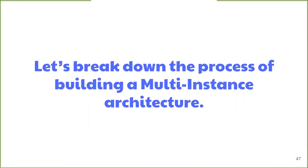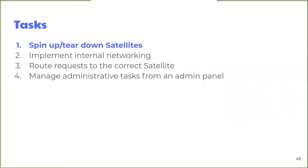We had several tasks to complete in creating a multi-instance architecture. First, actually being able to spin up and tear down Satellites. Second, making sure that containers within a single Satellite instance — like the NGINX server, Express API, and DGraph — can communicate with one another. Third, routing requests from the internet to the correct Satellite. Lastly, we want to make managing individual Satellites easy, so we need some kind of admin panel where front-end developers can log in and create Satellites, update schema, upload files for hosting, and introspect schema.